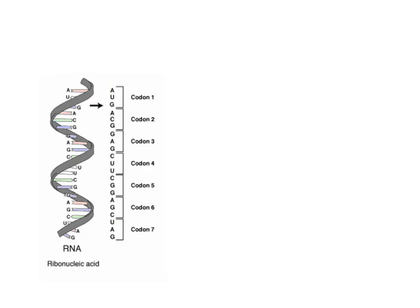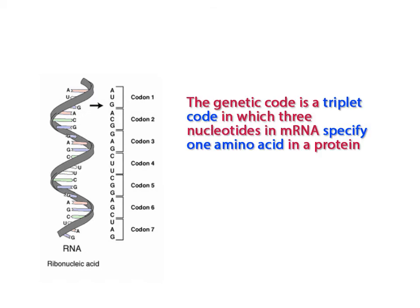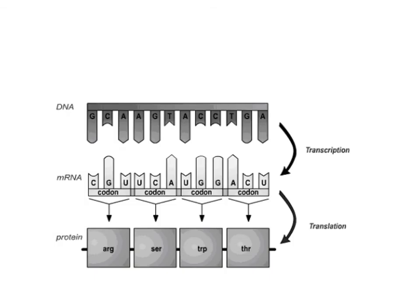Before we go any further, you need to understand that the genetic code is a triplet code in which three nucleotides in mRNA specify one amino acid in a protein. Sets of three nucleotides that code for a specific amino acid are known as codons. Each codon specifies a particular amino acid.